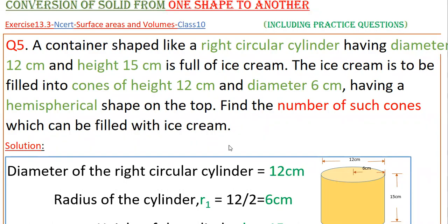Hello everyone. Today I am going to tell the solution of the fifth problem from exercise 13.3 from NCERT, from Surface Areas and Volumes class 10. A container shaped like a right circular cylinder having diameter 12 cm and height 15 cm is full of ice cream. The ice cream is to be filled into cones of height 12 cm and diameter 6 cm having a hemispherical shape on the top. Find the number of such cones which can be filled with the ice cream.